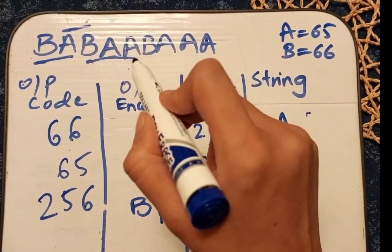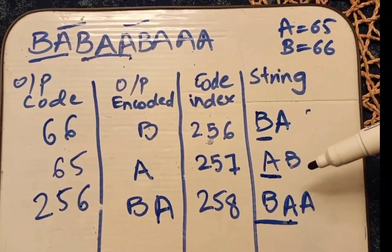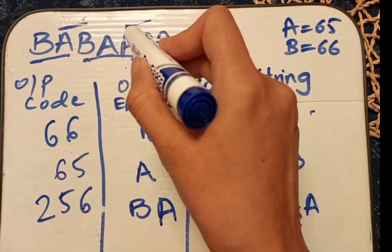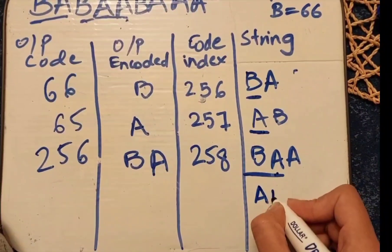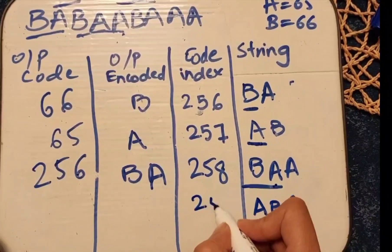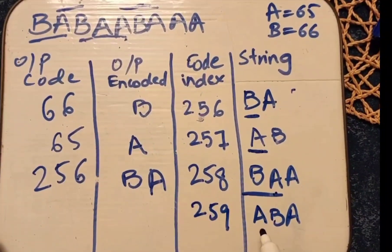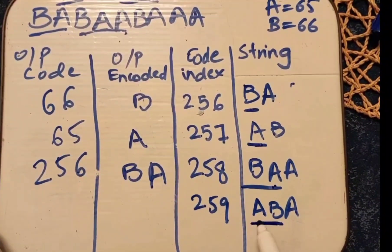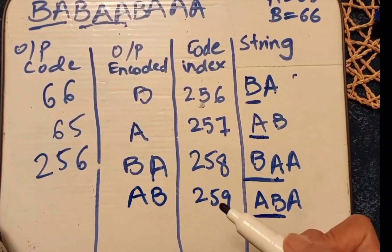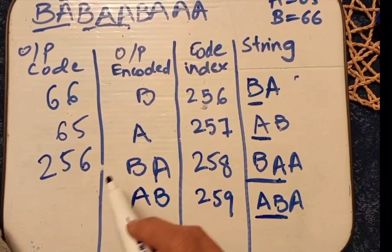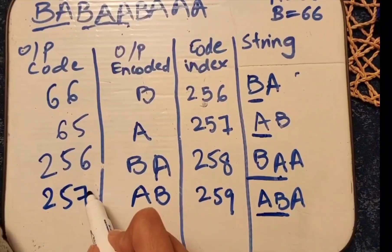The next substring starts from 'a'. 'ab' is already in the table, so we extend to 'aba'. The index increments to 259. The encoded output is the first element 'ab', and the code for 'ab' is 257.